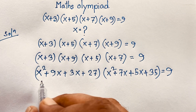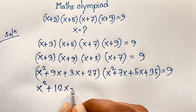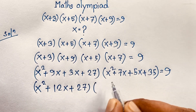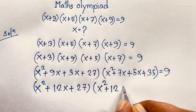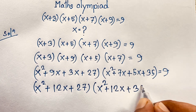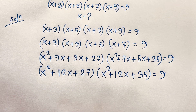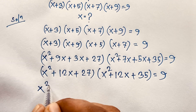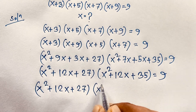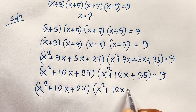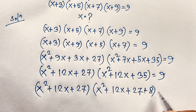We can write the first expression as x² + 9x + 3x = 12x, plus 27. And the second quadratic expression is x² + 7x + 5x = 12x, plus 35, equal to 9. So we have (x² + 12x + 27)(x² + 12x + 35) = 9. Notice that 35 is 27 plus 8, so we need plus 8.